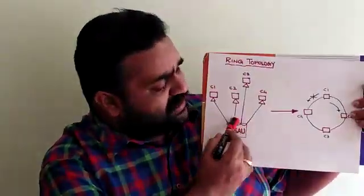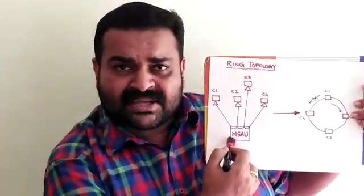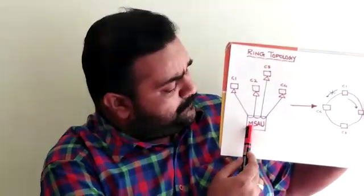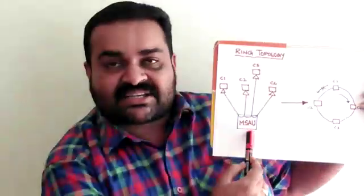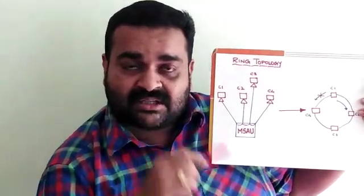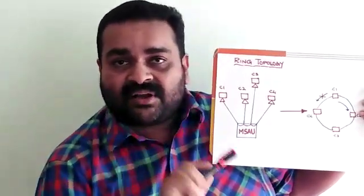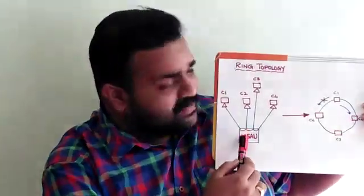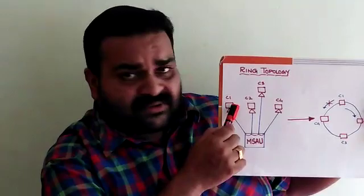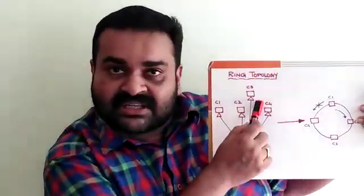The next topology is the ring topology. In star topology, the centralized device is a hub or switch. In ring topology, the centralized device is the MSAU — Multi-Station Access Unit. The hub supports bi-directional communication, while the MSAU supports unidirectional communication, meaning C1 and C3 communicate in one direction.